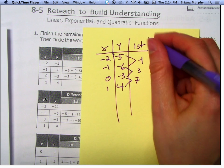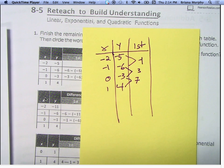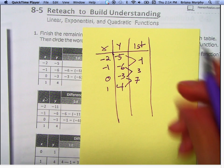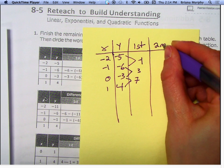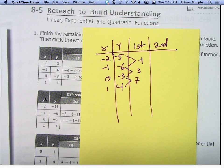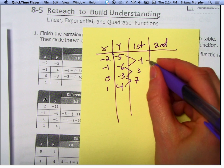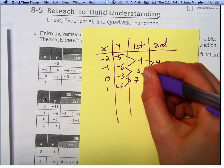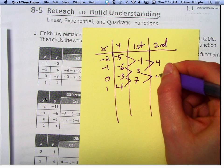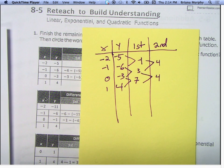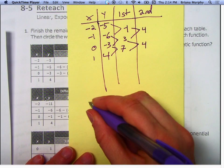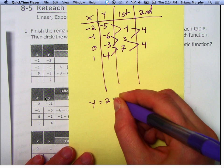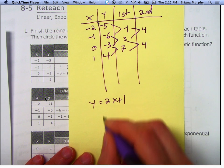Are these all the same? No. So we're going to do something called the second difference. Let's see if that gives me the same thing. Negative 1, you owe me $1 — now all of a sudden you have 3, so that's plus 4. And 3 to 7 is plus 4. That's called the second difference.